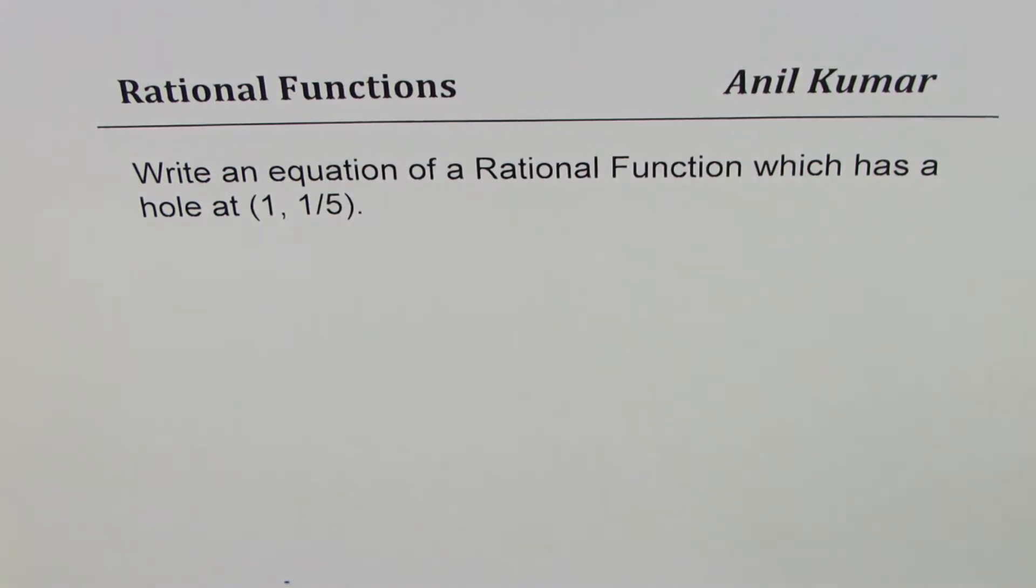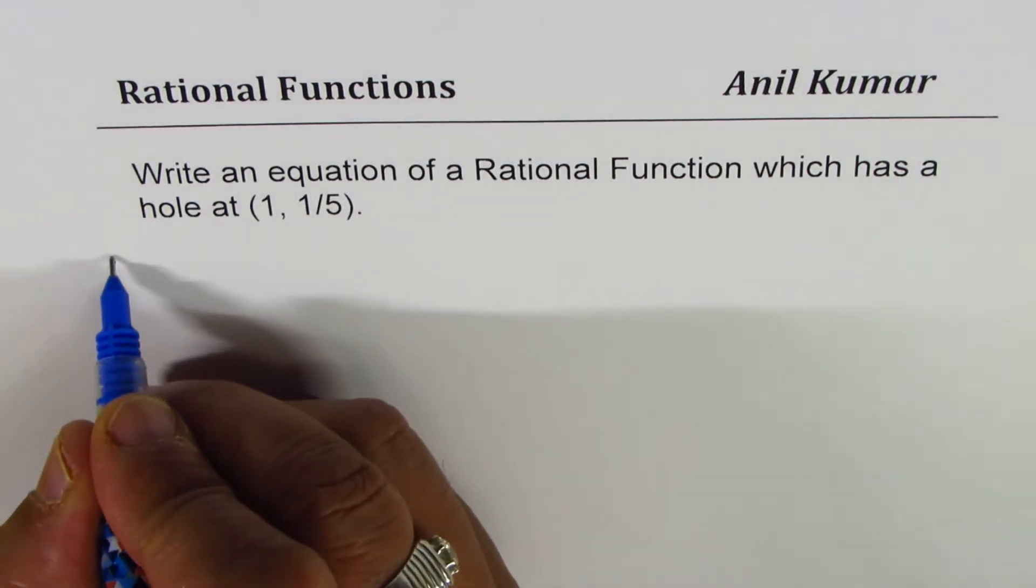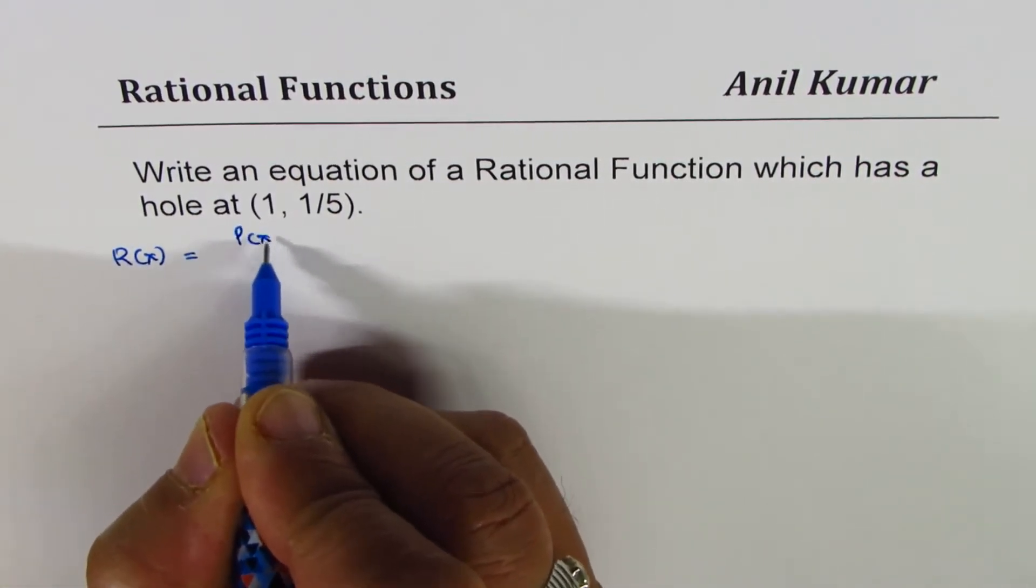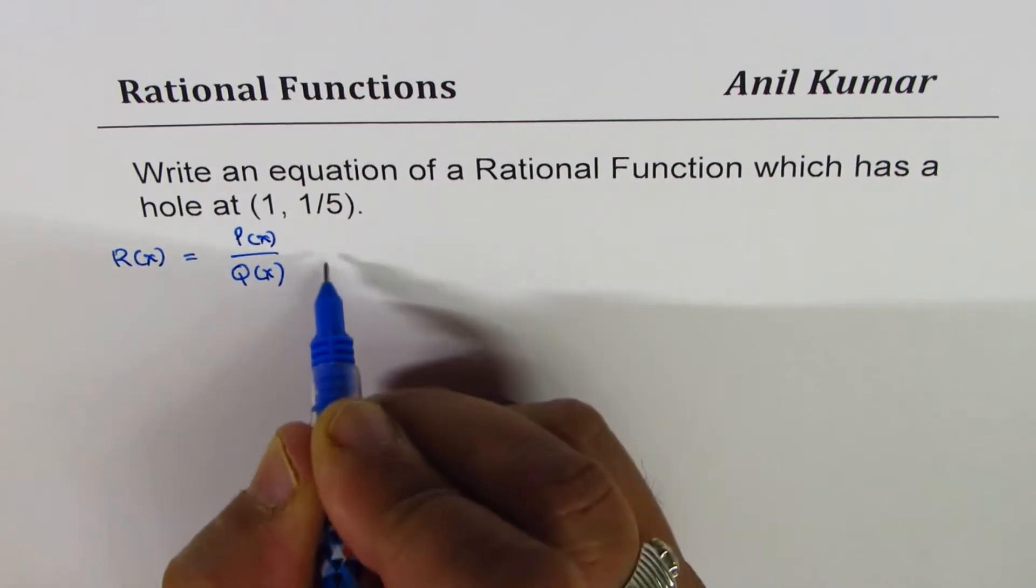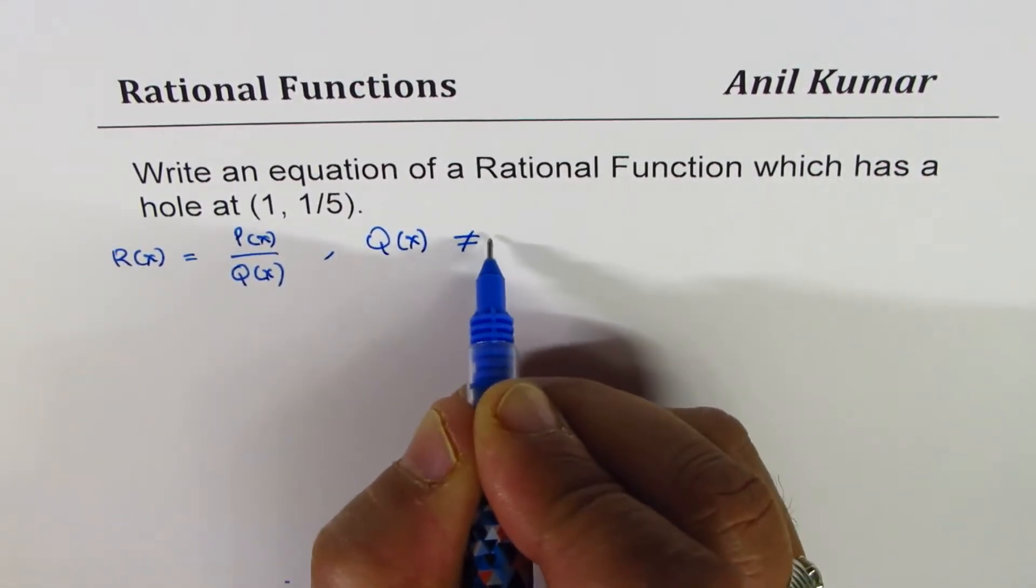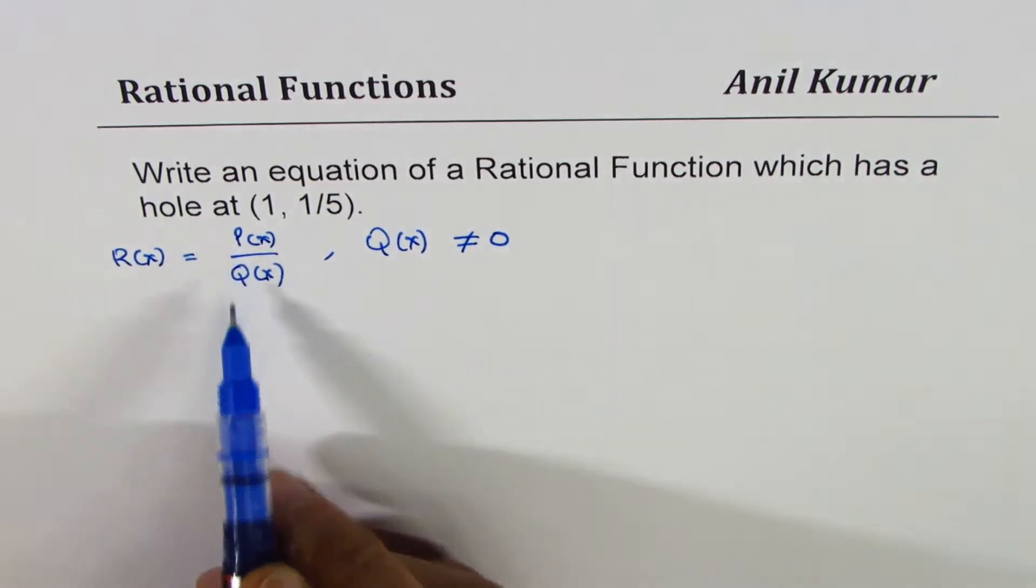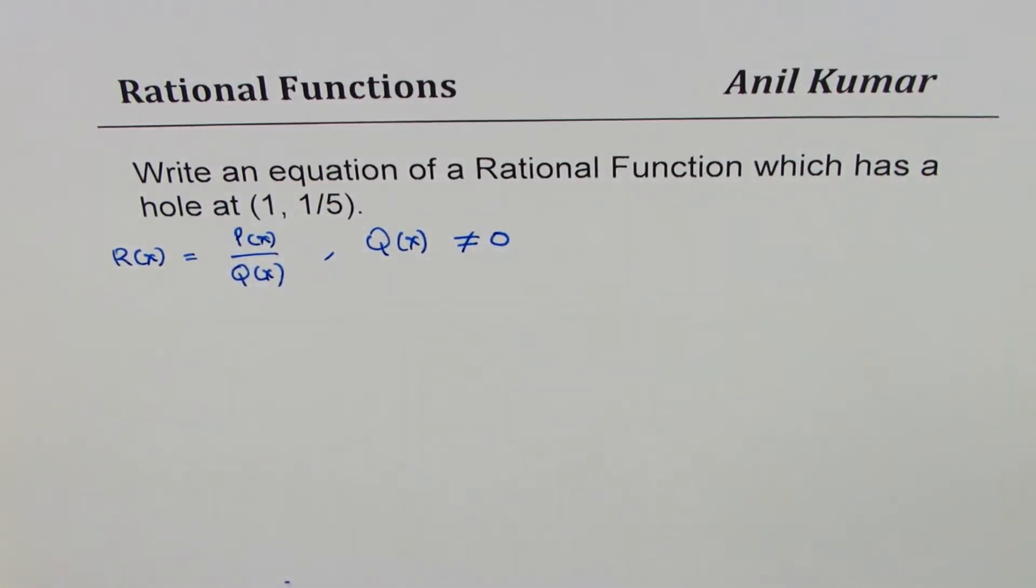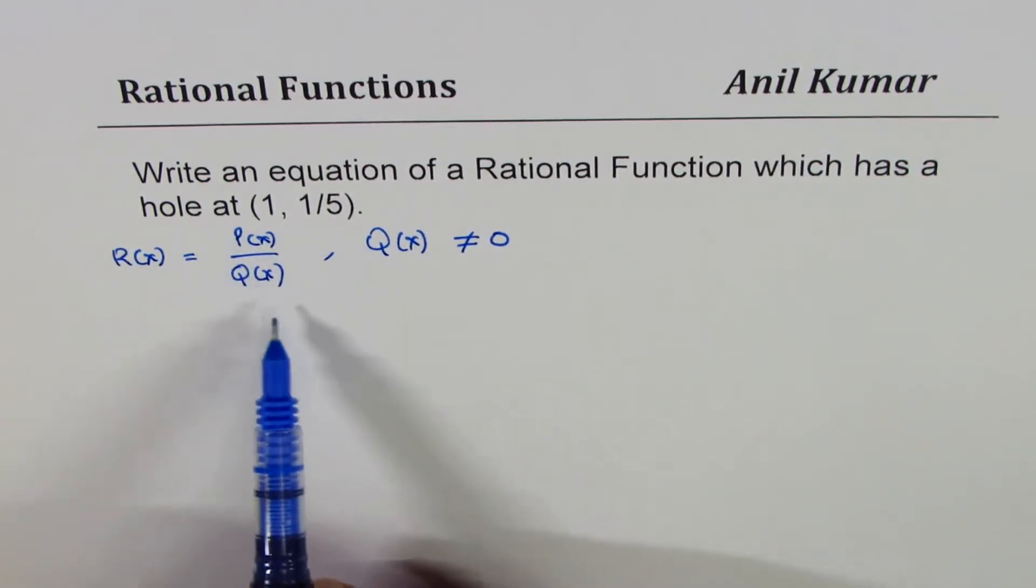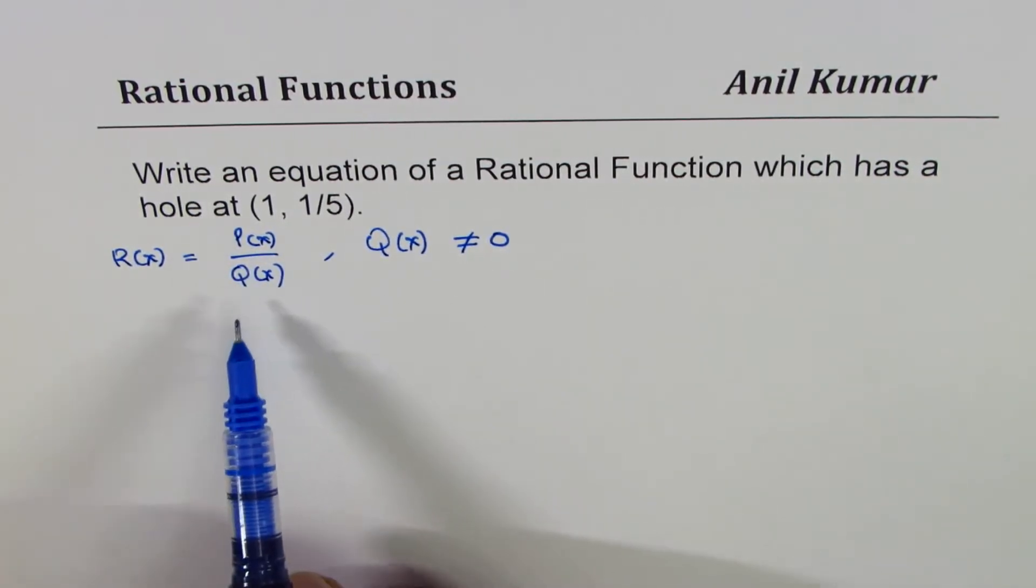Let me give you some background. A rational function, let's say R(x), is of the form P(x) over Q(x), where the denominator Q(x) is not equal to 0. Both P and Q are polynomials. So now we have to write a rational function with some numerator and some denominator which has a hole at (1, 1/5).